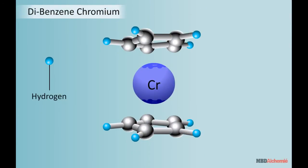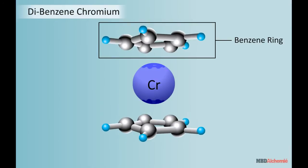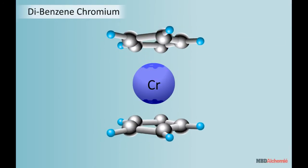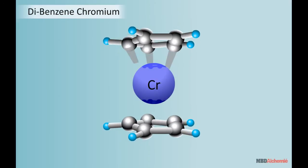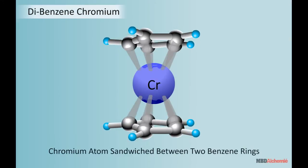Dibenzene Chromium also has a similar structure like ferrocene in which the chromium atom is present between the planes of two benzene rings such that all carbon atoms are at equal distance from the chromium atom. In this structure too, the chromium atom like iron in ferrocene is sandwiched between two benzene rings.